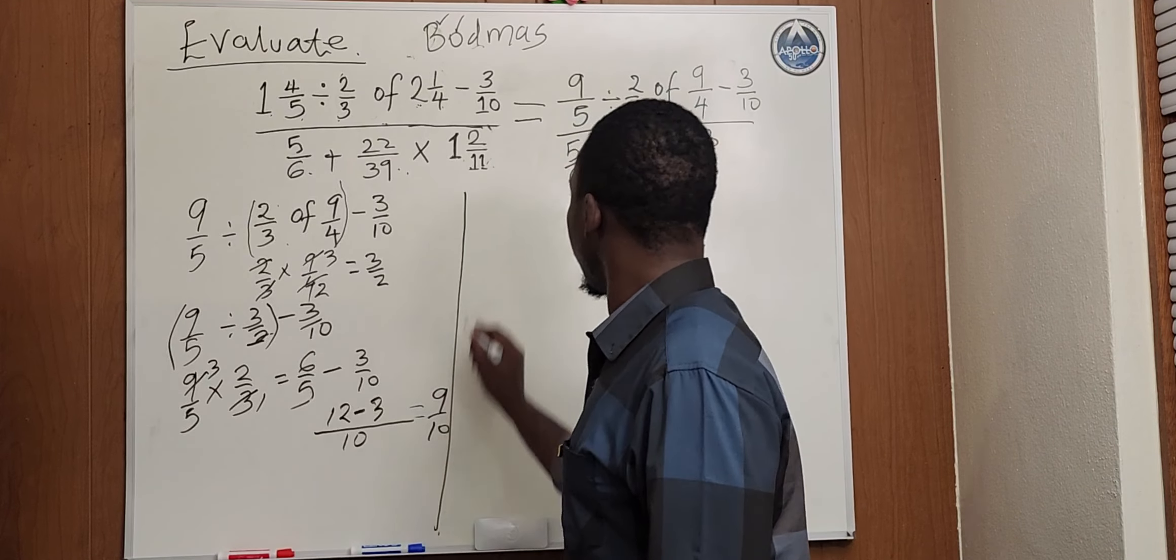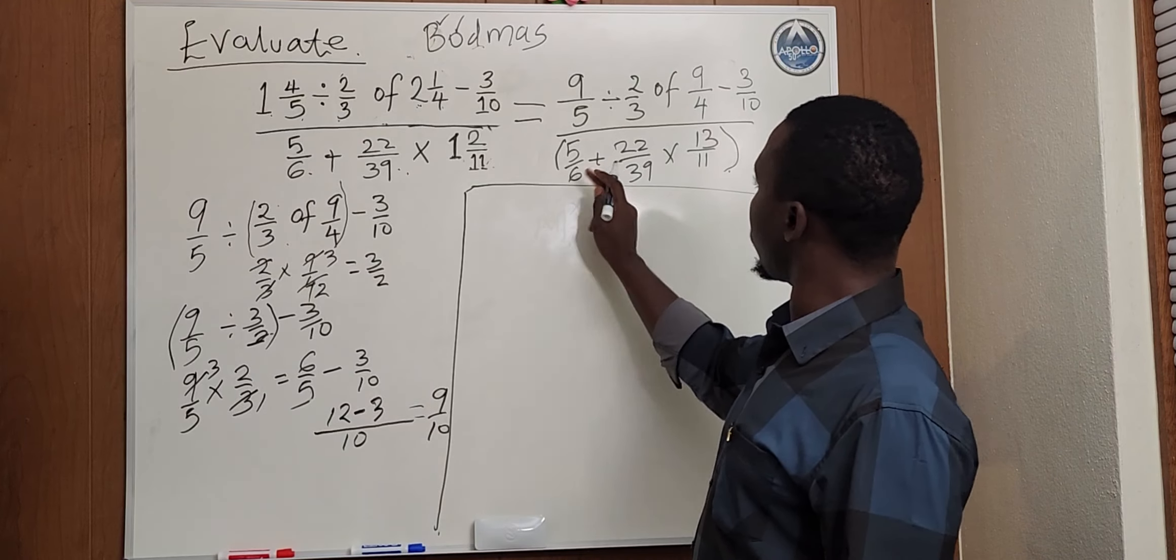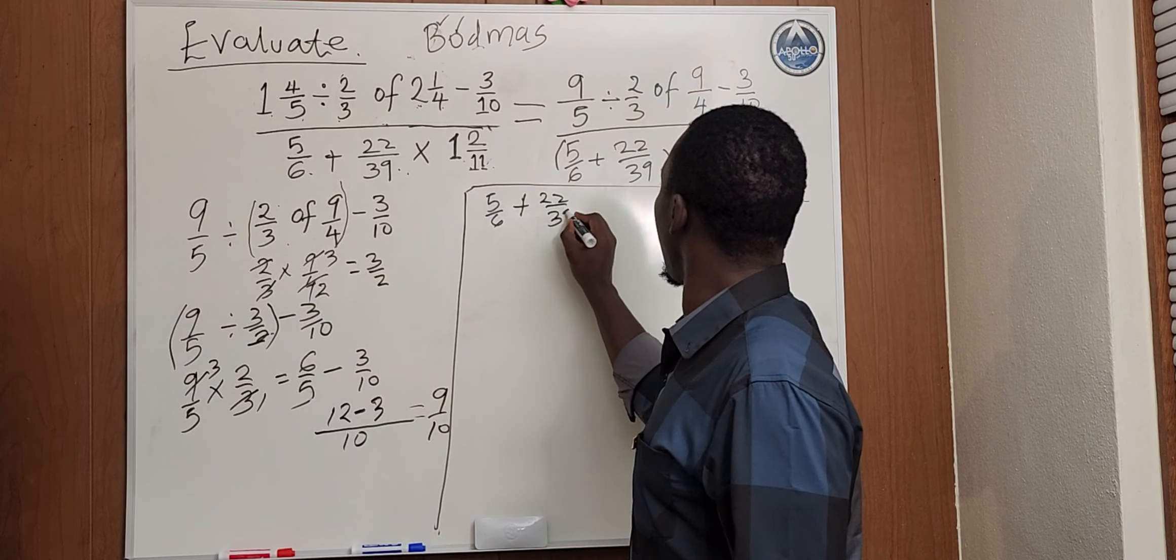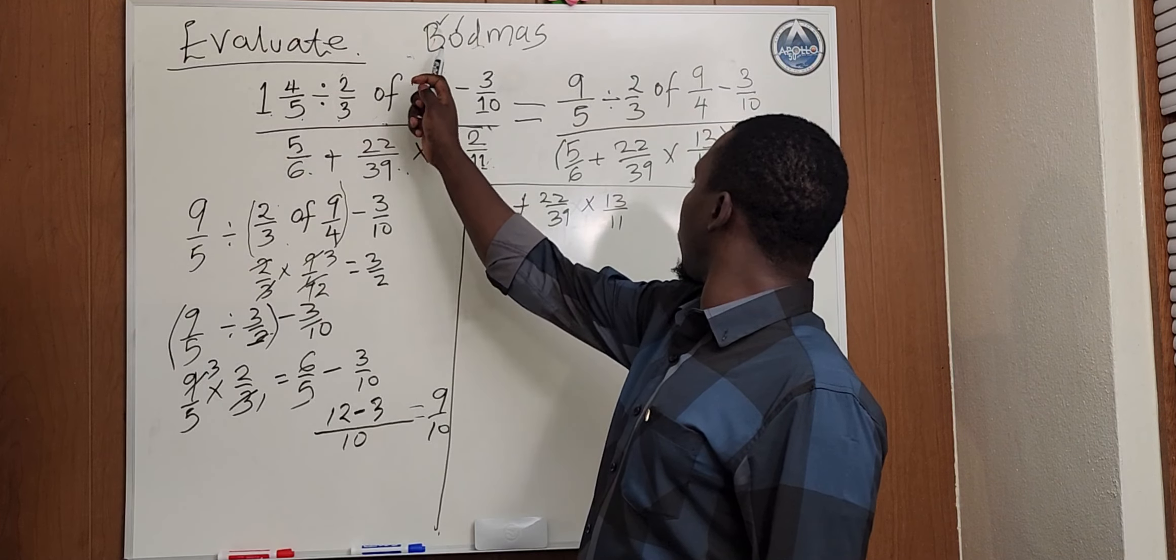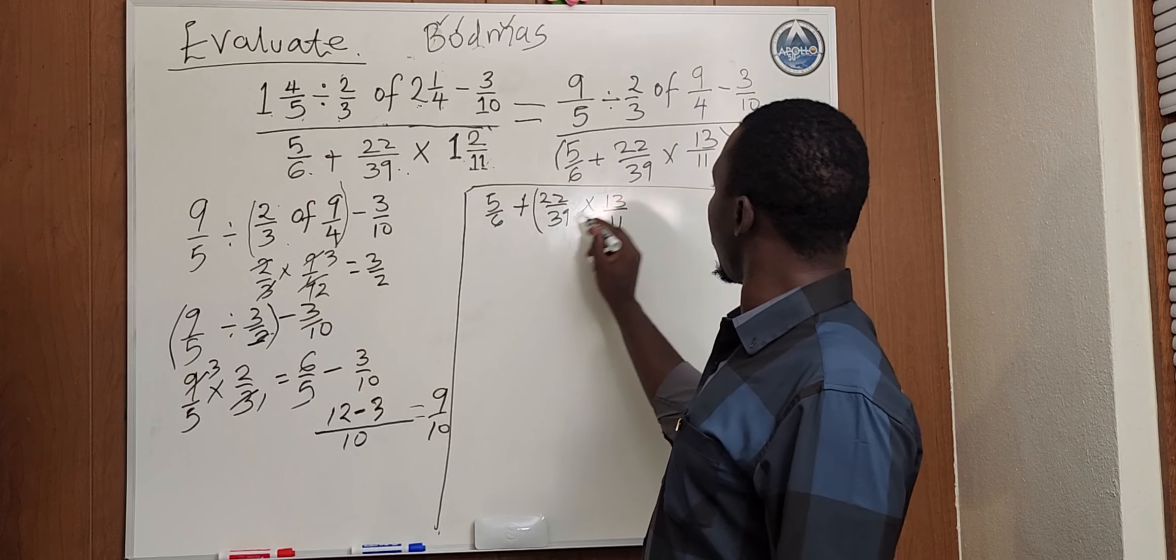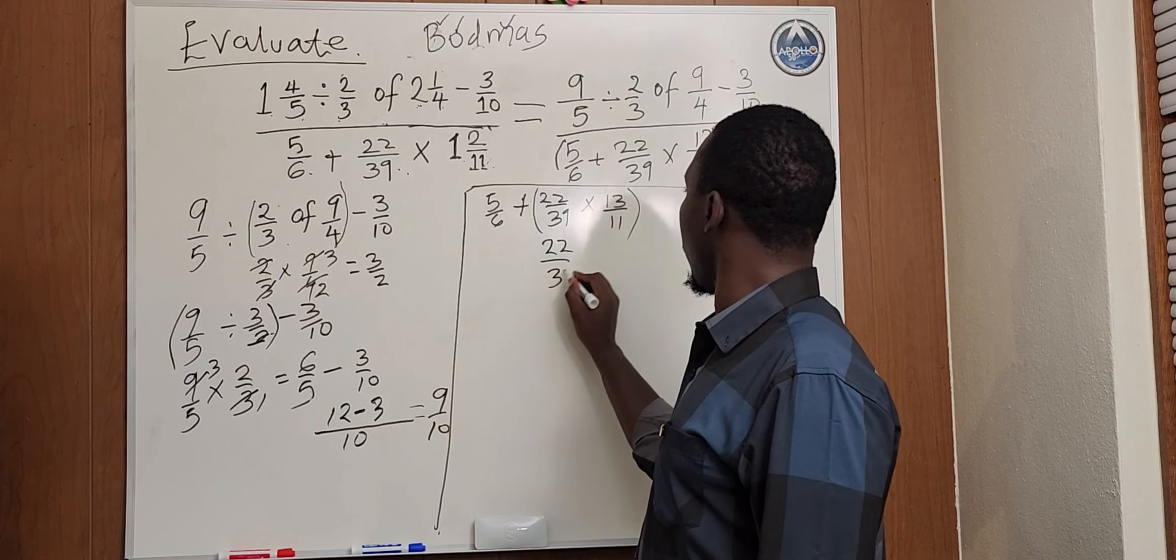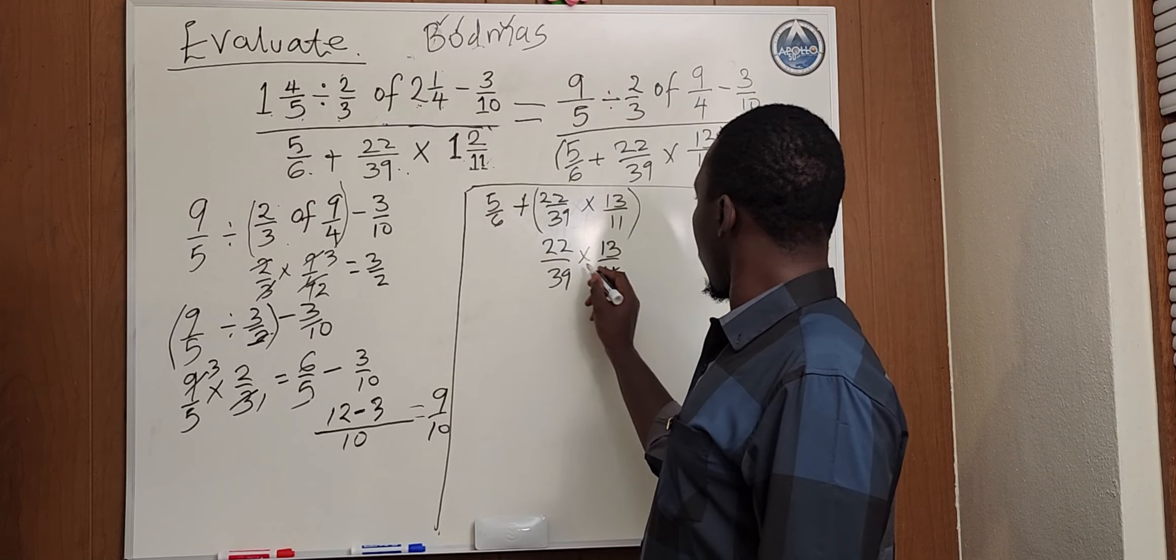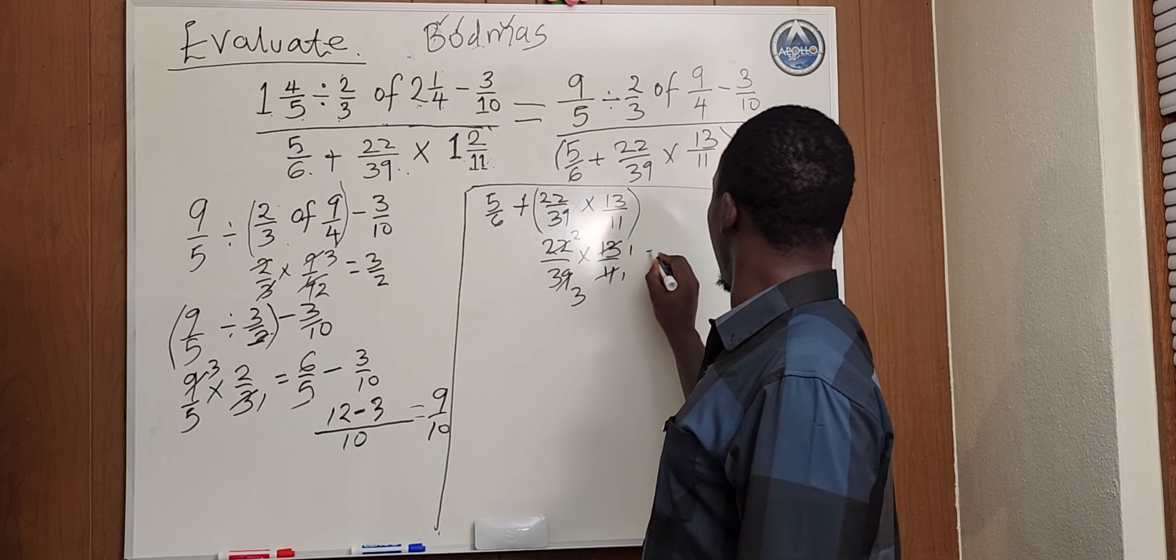Now the next part, we will now solve the denominator here. If we look at the denominator, 5 over 6 plus 22 over 39 times 13 over 11. We also start, we don't have the bracket here on the denominator. Of is not there. Division is not there. But we do have multiplication here, which would be these two terms. If we consider these two terms, it will be 22 over 39 times 13 over 11. If we divide and cancel here, 11 will go here 2 times and 13 will go here 3 times. Then the answer will be 2 over 3.